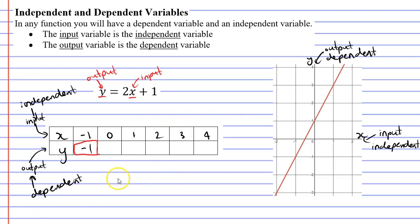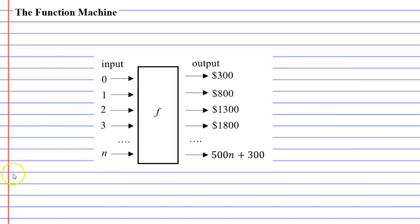Now I mentioned that I'd like to talk about something we call the function machine. And a function machine also talks about having inputs and outputs. You'll notice when we input a value of 0, you get an output of $300.